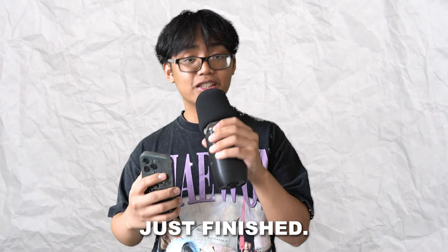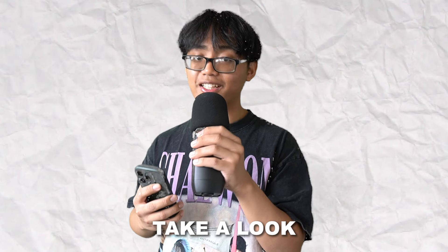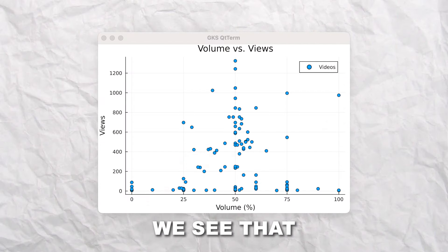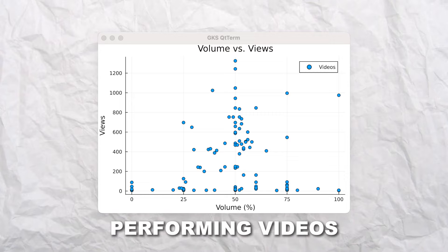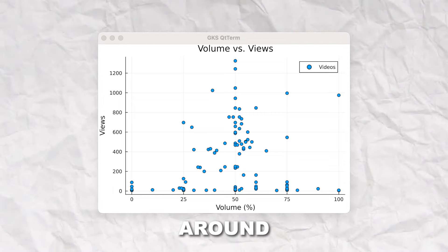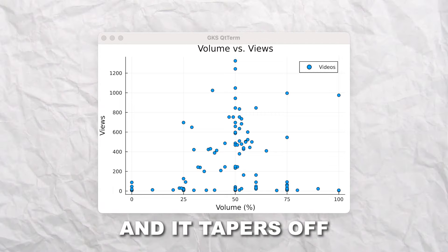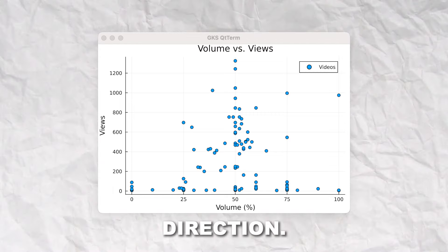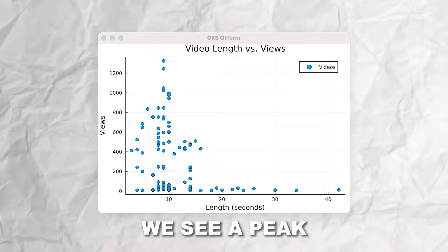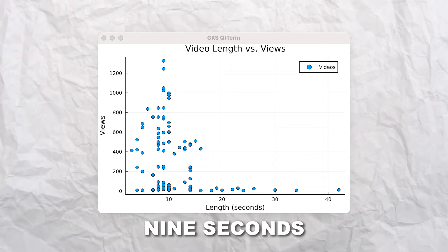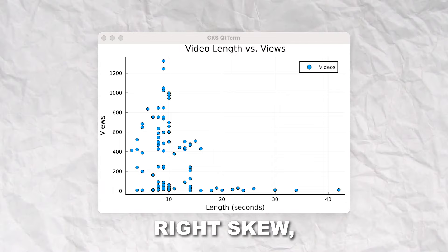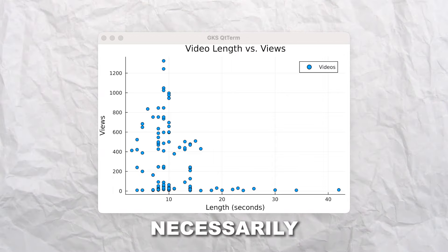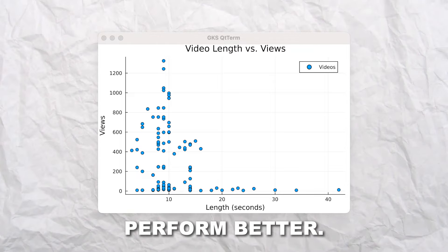Alright, so the 8th generation has just finished, so let's take a look at the results. In terms of volume, we see that the best performing videos had a volume around 50% of the maximum, and it tapers off pretty equally in either direction. For video length, we see a peak at around 9 seconds and a pretty heavy right skew, which means that longer videos didn't necessarily perform better.